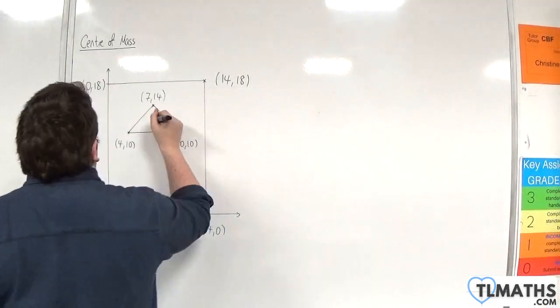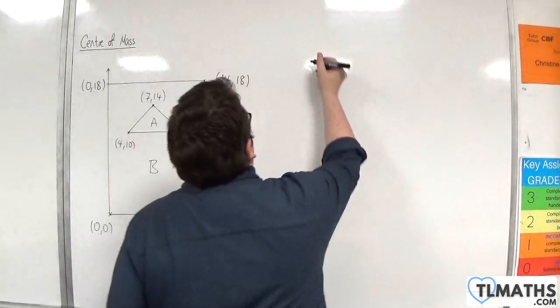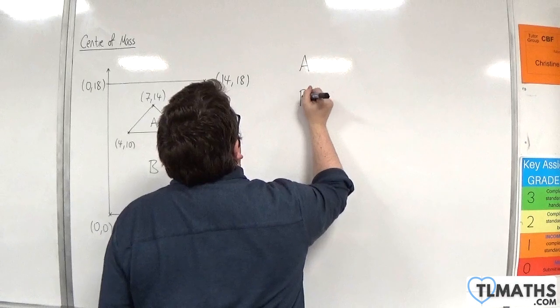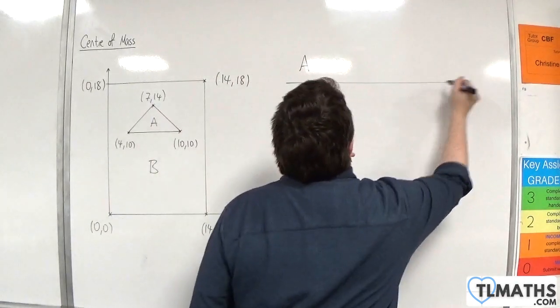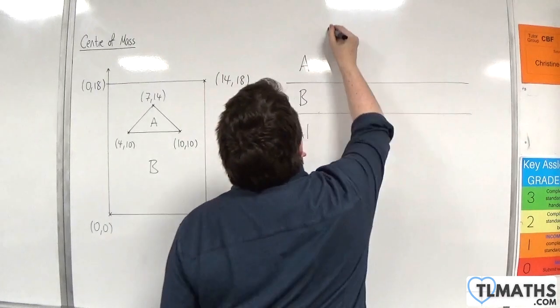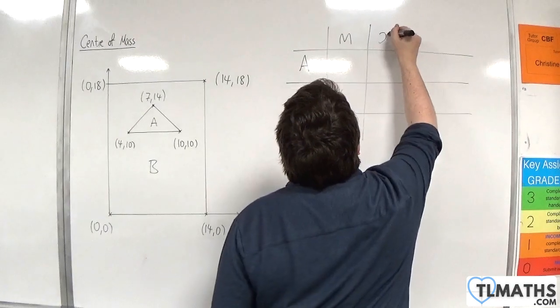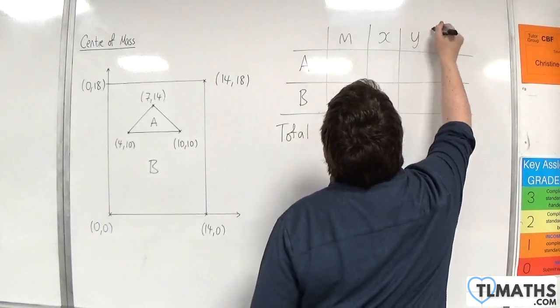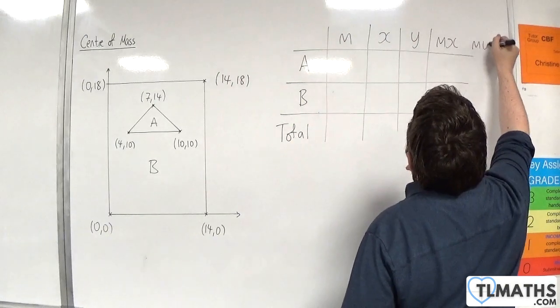I'm going to call the triangle shape A and the rectangle shape B. So we've got A, B, and the total. We've got the mass, the x and y coordinates of the centre of mass of the respective shapes, Mx and My.